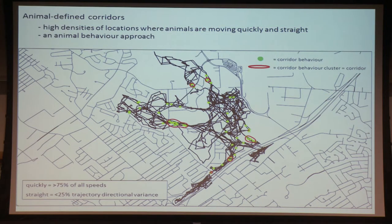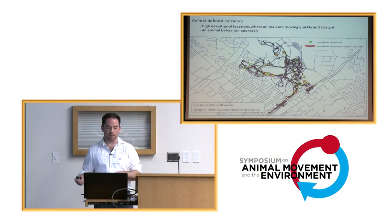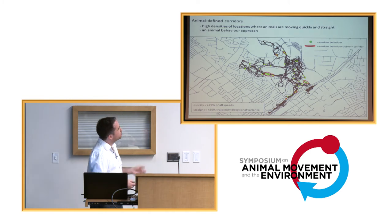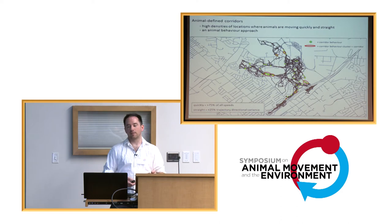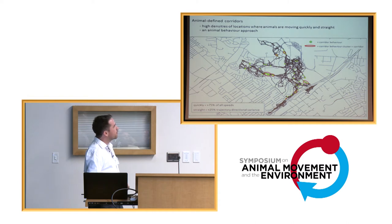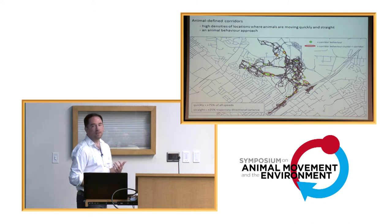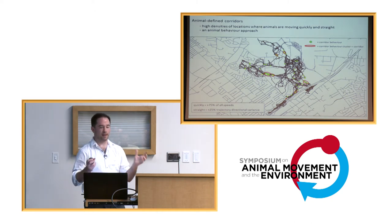I went and talked to Bart and Cameron and said, can we turn this into an R script? I made some rather arbitrary cutoffs — what does fast look like? Maybe the top 25% of movements are fast. What does straight look like? Maybe directional variance is less than 25%. I ran the model and the thicker black lines are the step lengths. The green dots were segment midpoints identified as corridor-like behavior. Then we put a utilization distribution around those behaviorally identified points to help define the boundaries of the corridor.